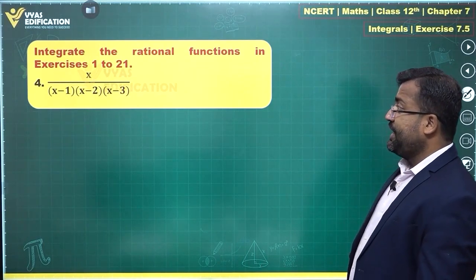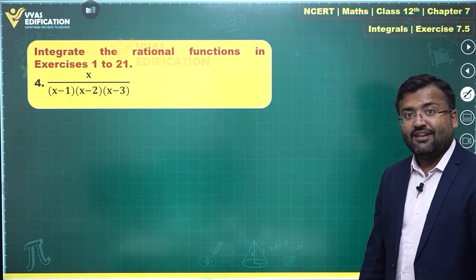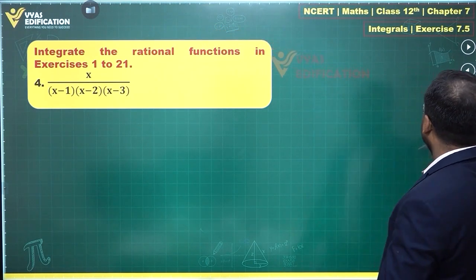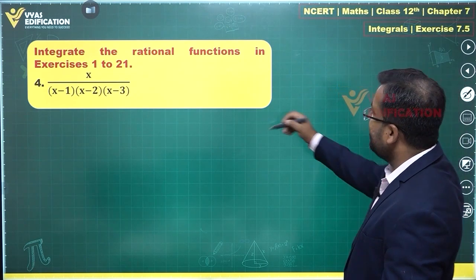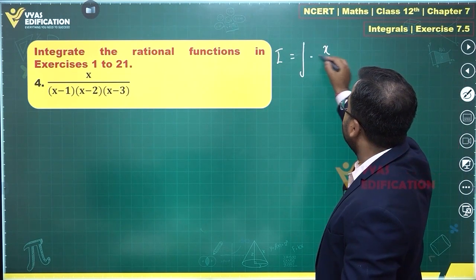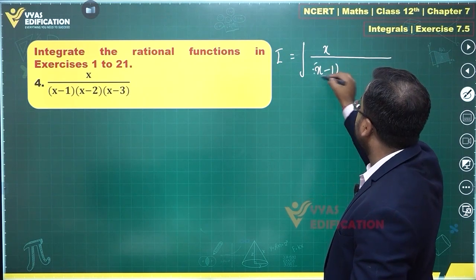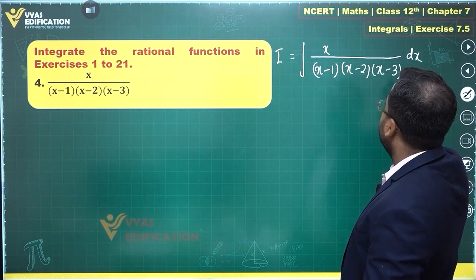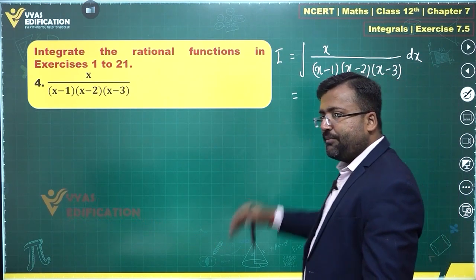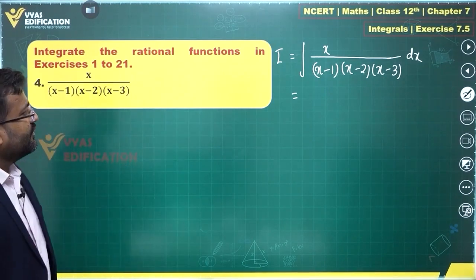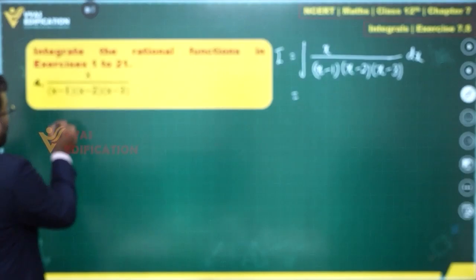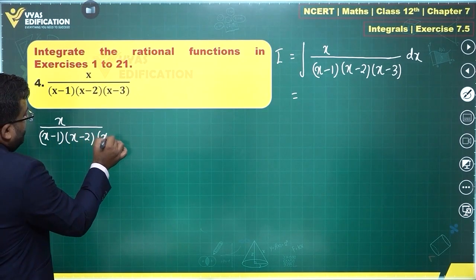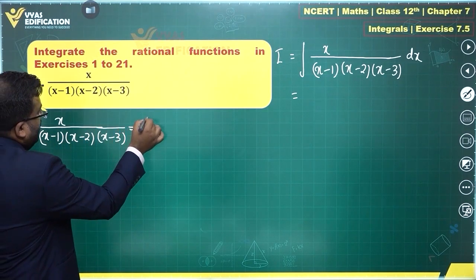The fourth question asks us to integrate x upon (x minus 1)(x minus 2)(x minus 3). Seeing this question, you would realize it looks pretty simple — we can directly write the partial fractions. So x upon (x minus 1)(x minus 2)(x minus 3) dx will have to be written as a sum of partial fractions: A upon (x minus 1) plus B upon (x minus 2) plus C upon (x minus 3).